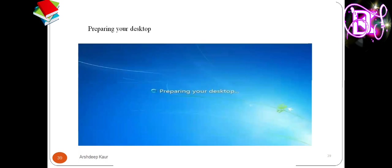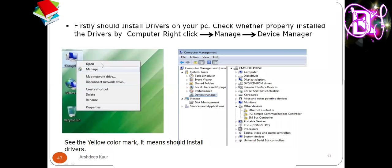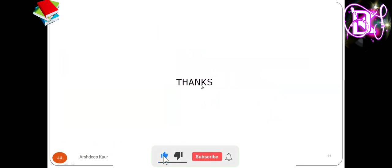Now Windows is preparing your desktop. This is the fresh copy of Windows 7 — it is now installed on your computer system and you can start your work. You will also need to install some drivers on your PC. To do that, right-click the Computer icon on the desktop, go to Manage, open Computer Management, and click on Device Manager — then you will be able to add or install drivers on your PC. Thank you.